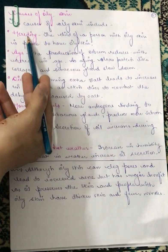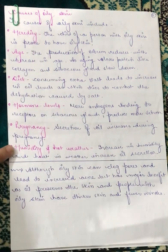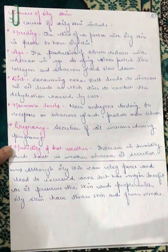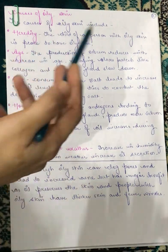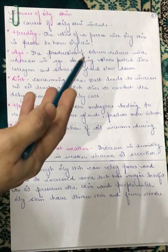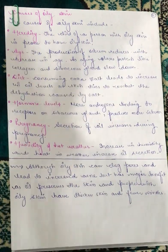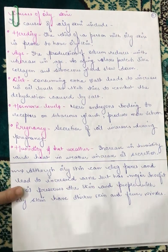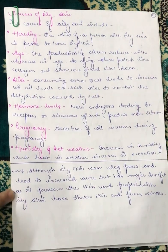The first cause is heredity — if a parent's skin is oily, there are more chances that their offspring's skin will also be oily. The next cause is age: the production of sebum reduces with increasing age, as aging closes pores, the skin loses proteins like collagen, and sebaceous glands slow down their activity.